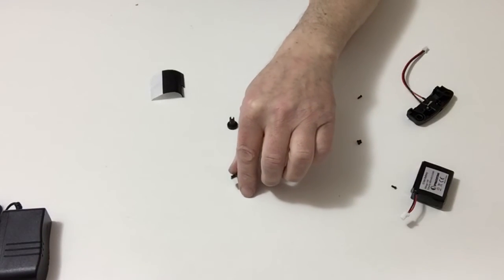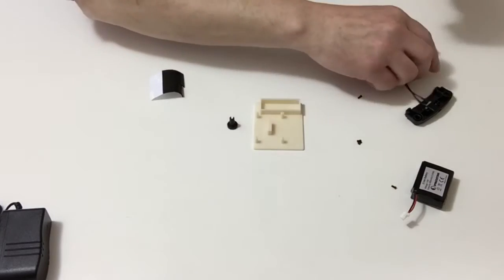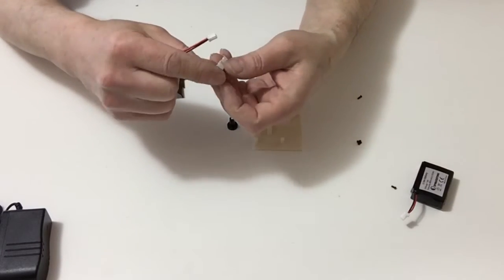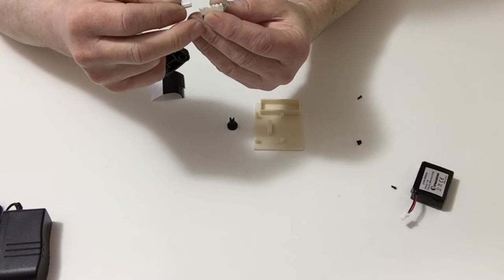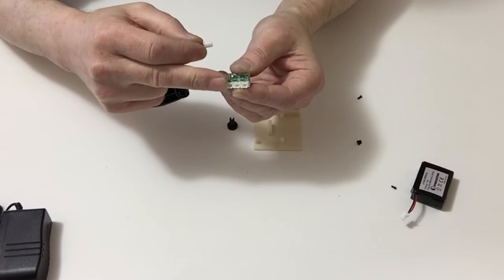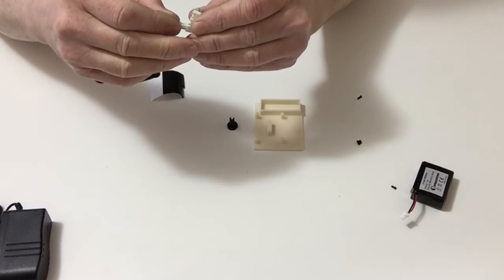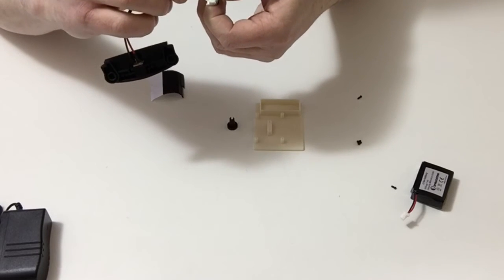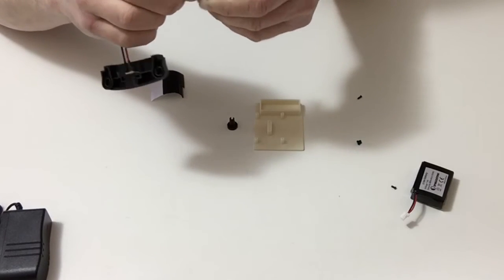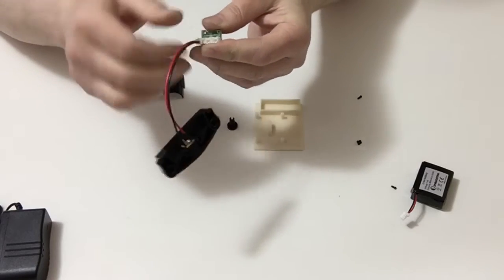Once we have done that, we are going to take the connector making sure that it goes into CN1, which is connector 1, and then just carefully push that down into position until it clicks.